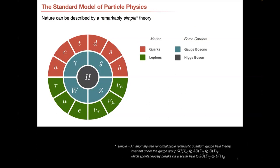The Standard Model is composed of different sectors, generally organized so that you have fermions — the matter particles — comprised of leptons and quarks, and these interact with each other via the gauge bosons shown in blue. The photon is responsible for electrodynamic interactions, the gluon for strong nuclear forces, and W and Z for the weak nuclear forces.